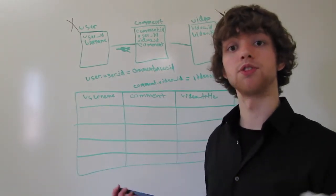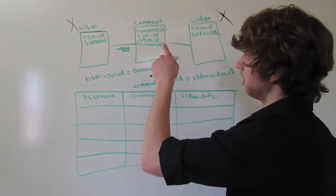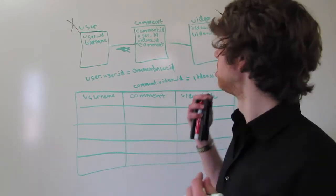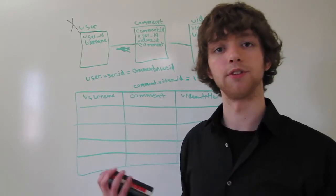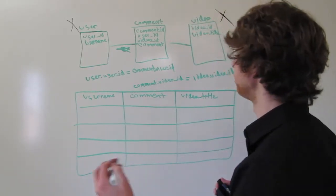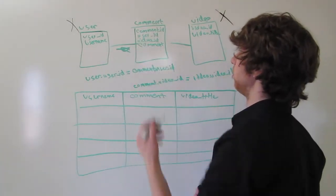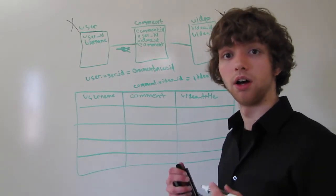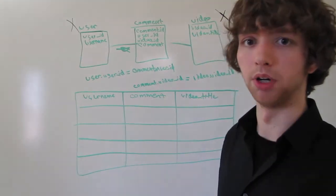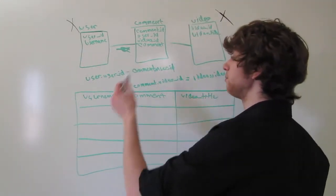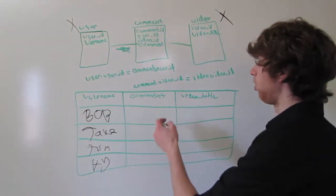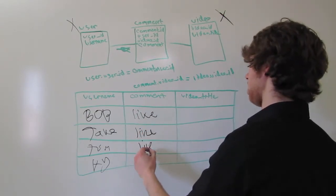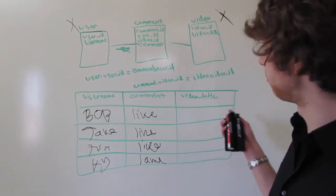Can comments be excluded? Well, let's think about each individual key. The foreign keys — user ID and video ID — are both labeled NOT NULL. So every single comment is going to have a user, and every single comment is going to have a video. In this situation, all of the comments will be returned. So if we had 10 comments, we would have all 10 of them. Only some users would show up, but all comments would appear in the comment column. And only some video titles would be included.